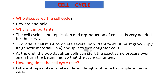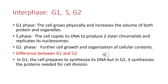Different types of cells take different lengths of time to complete the cell cycle. For living organisms like us, it takes about 24 hours; some cells take 8 to 10 hours. So the duration varies depending on the type of cell.